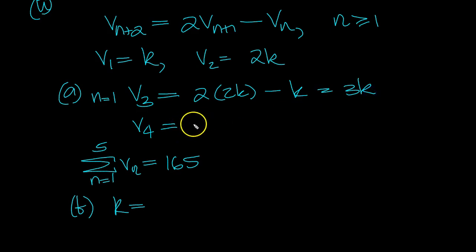And v4 is 2, this would be n equals 2, 2v3, which is 2 lots, so 3k, minus v2, which is 2k. 6 minus 2 is 4k.